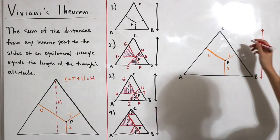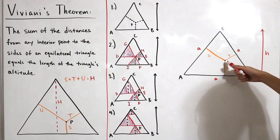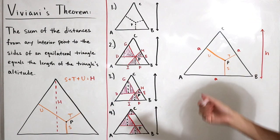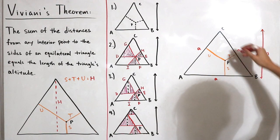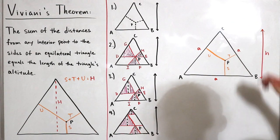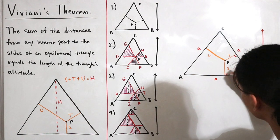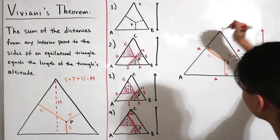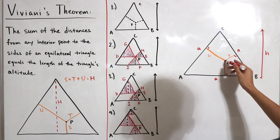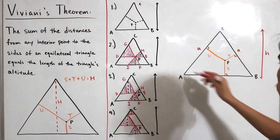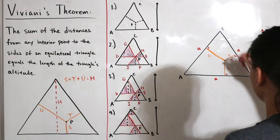Let triangle ABC be equilateral. Since it's equilateral, all sides have the same length — I'll call it lowercase a. We choose some interior point P, and draw the perpendicular distances from P to each side of the triangle. Each distance meets a side at a right angle, giving three right angles at the feet of the perpendiculars.